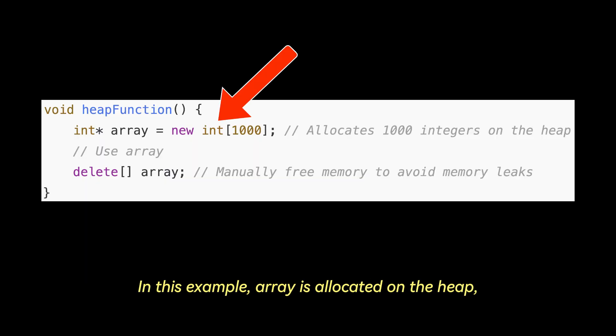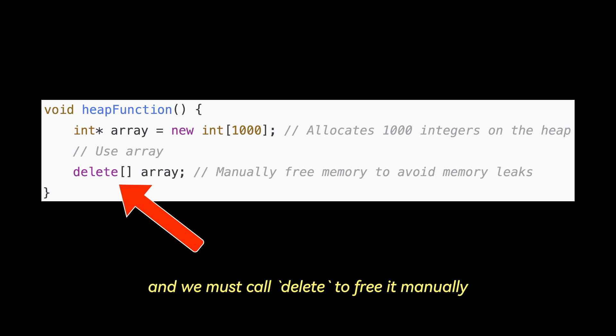In this example, an array is allocated on the heap, and we must call delete to free it manually. If delete is not called, this results in a memory leak because the memory remains allocated even after the function returns.